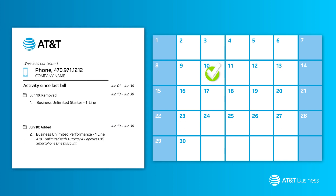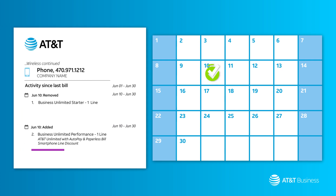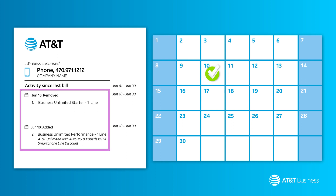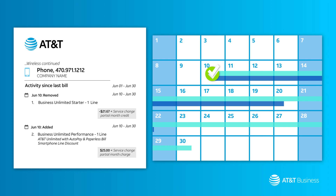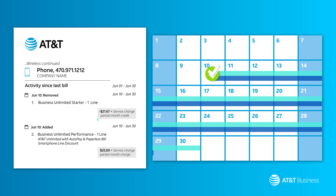Or, let's say you change to a new rate plan 10 days into your new billing period. In this case, you'll see both a credit and a charge. You'll receive a partial credit for the days the old plan was no longer active and a partial charge for the days the new plan was active.